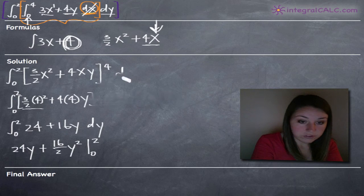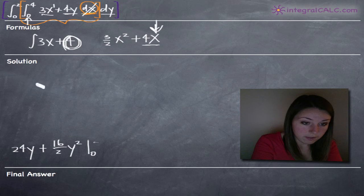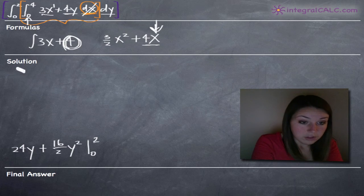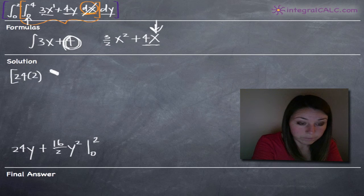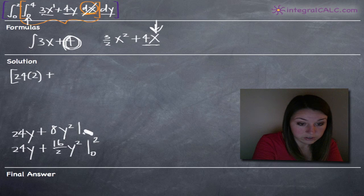So just to give us some more room here. 0 to 2. Okay, so now we're going to go ahead and plug in our limits of integration. So doing that, we'll get 24 times 2 plus... and this is actually going to simplify. Let's write this here. This would simplify to 24y plus 16 over 2 is 8. So 8y squared on the range 0 to 2.